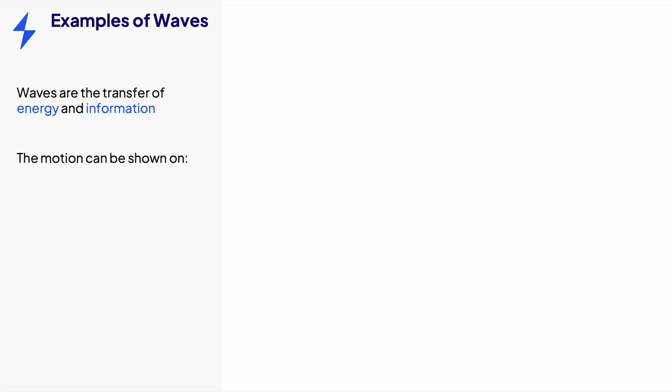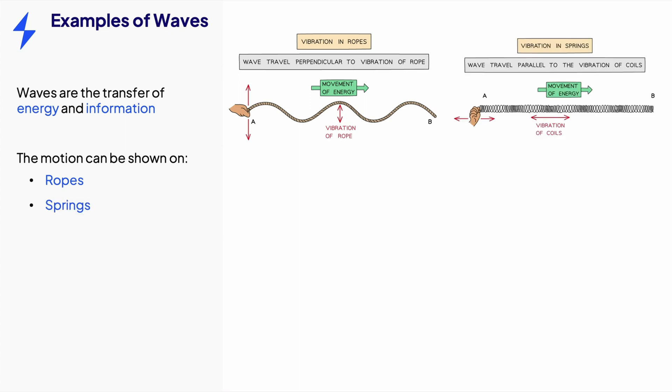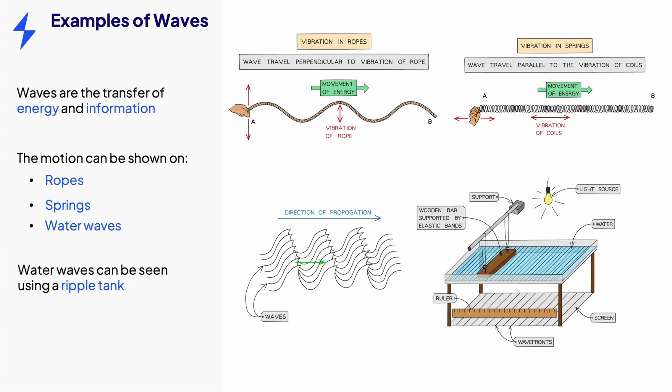The motion can be demonstrated on a rope when it's shaken up and down which shows how transverse waves such as electromagnetic waves move, on springs when it's shaken forwards and backwards which shows how longitudinal waves such as sound waves move, and water waves which have ripples in the water causing it to oscillate. Water waves can be demonstrated from experiments using a ripple tank. A wooden bar oscillates from a support on the surface of shallow water.